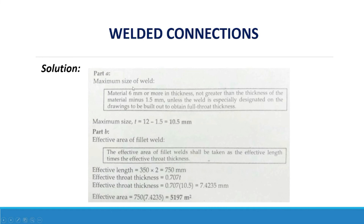Part A: Maximum size of weld. For material 6mm or more in thickness, the weld size shall not be greater than the thickness of the material minus 1.5mm, unless specially designated on the drawings. Therefore, maximum weld size = 12mm − 1.5mm = 10.5mm.